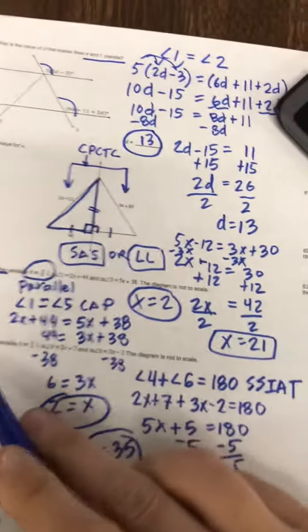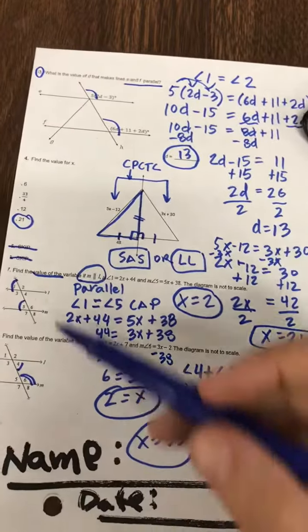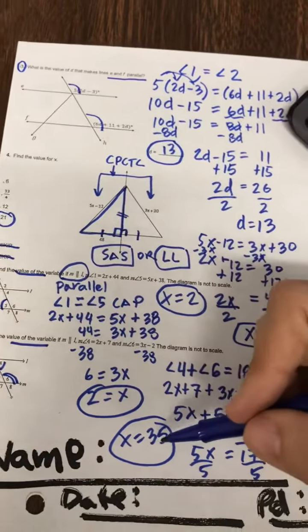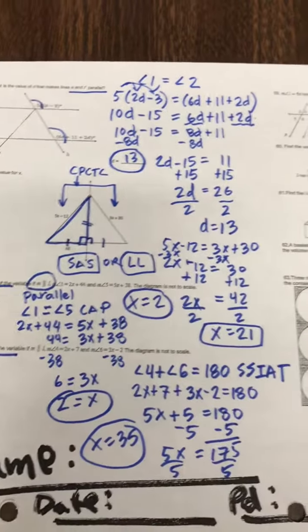So question 8, it says, find the value of the variable, the variable here is X, and I solved 35. Next one.